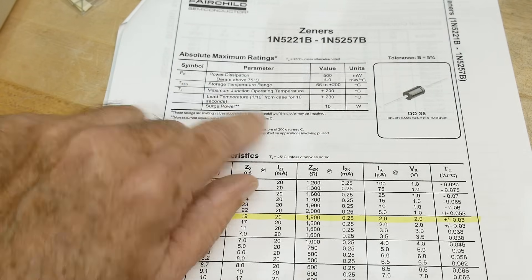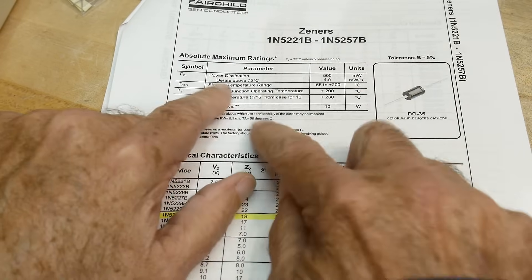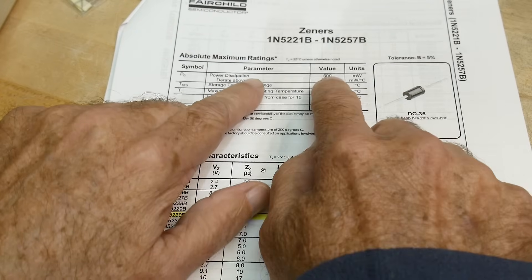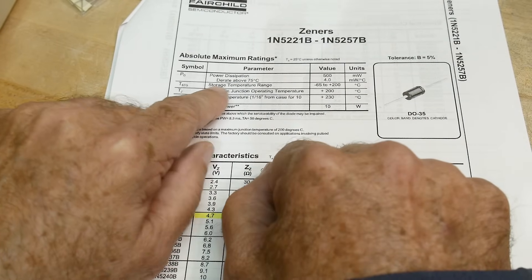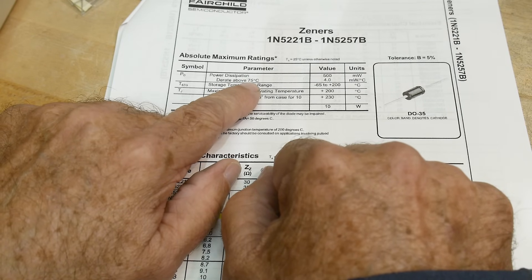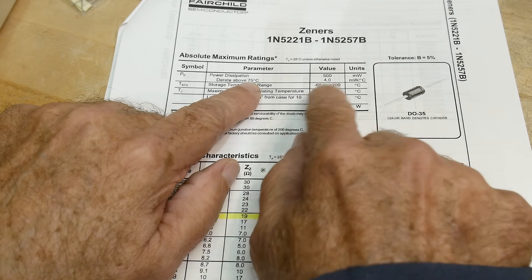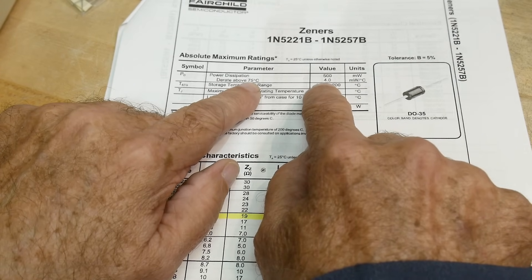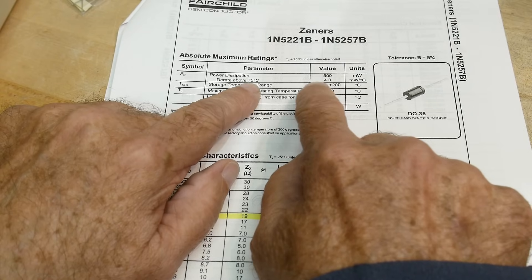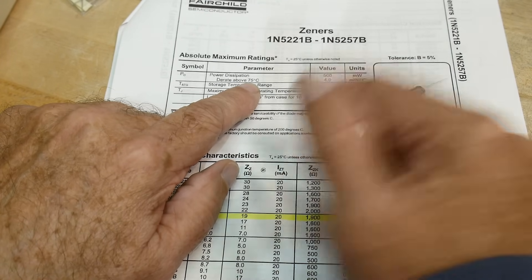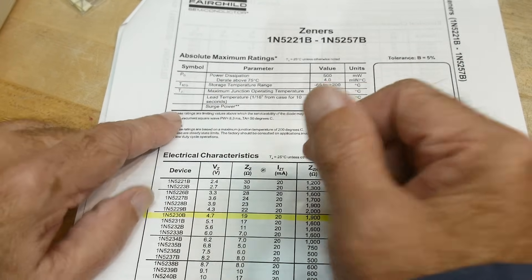That's the 4.7 volt one. This goes between 2.4 and 11 volts. But there are some ones that apply to all of them. That is the power dissipation. Like I said, it was 500 milliwatts, so it's a half a watt part. And if you get it hotter than 75 C, then you need to apply a different correction factor. So at this point there's a 4 milliwatts per degree C derating for that.